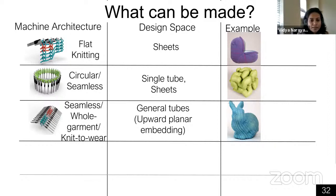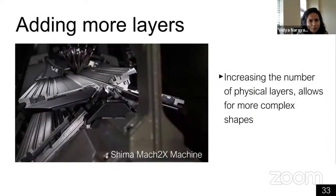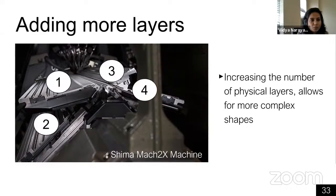The two-bed machine tends to be called seamless, whole garment, or knit-to-wear machines in the industry, mostly because most garments like a t-shirt can be constructed as a combination of tubes. What they can produce are general tubes that can be combined in various ways as long as the skeleton has this upward planar embedding. The reason we had this planarity constraint is because we were out of needles, so an obvious question is: can we add more layers? Can we add more needles and beds?